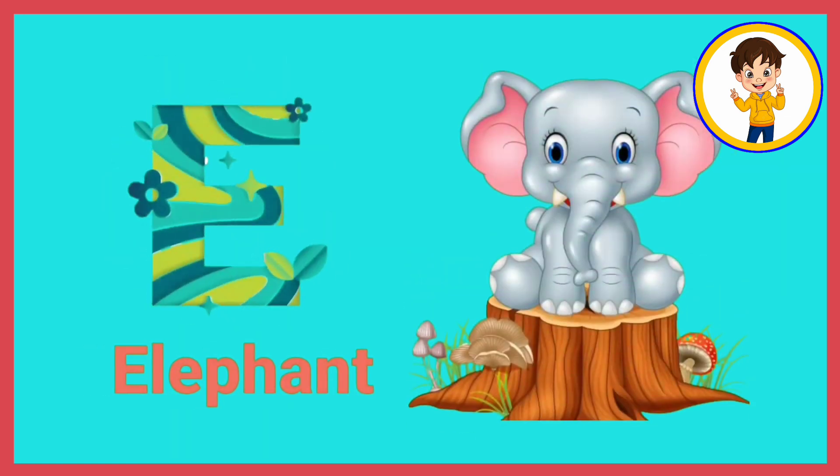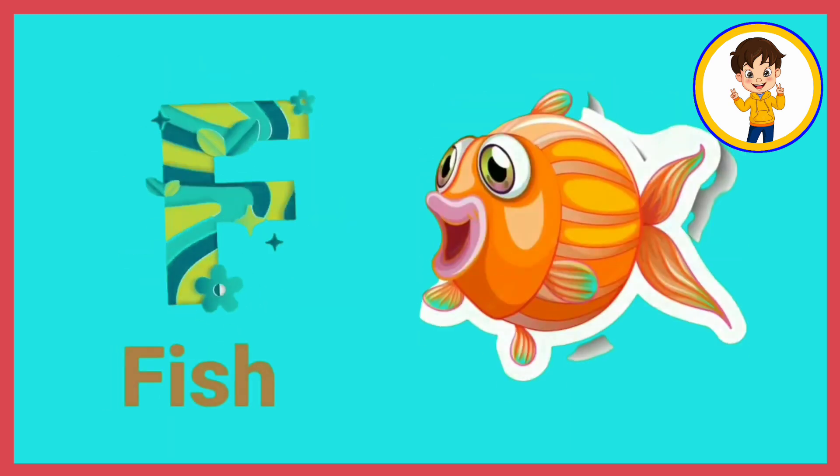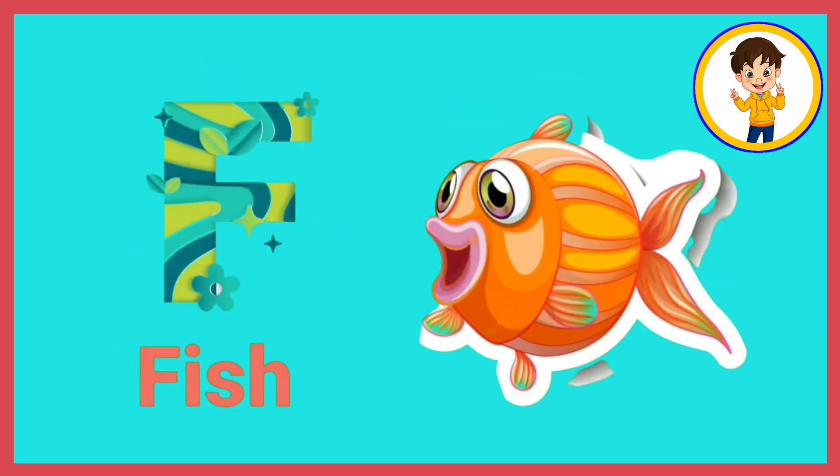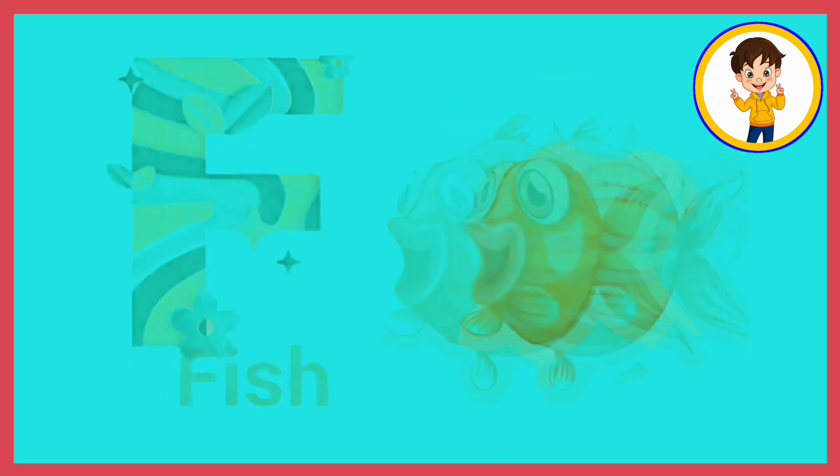E. E for elephant. Elephant means hathi. F. F for fish. Fish means machli.